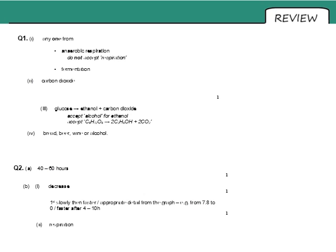Answers to question one: the process which caused the gas to be given off is anaerobic respiration or fermentation — only those two answers are accepted because we're talking about yeast. The gas produced was carbon dioxide. The word equation was glucose producing ethanol plus carbon dioxide. Examples of food produced using this reaction include bread, beer, wine, or alcohol, as these all use alcoholic fermentation.